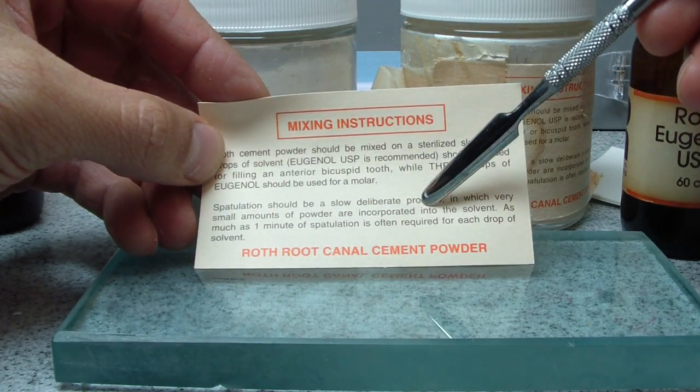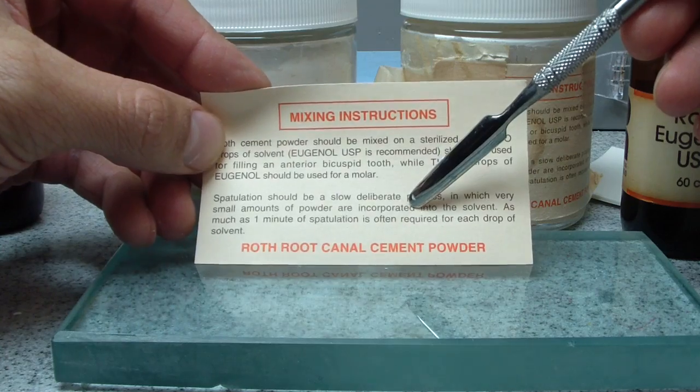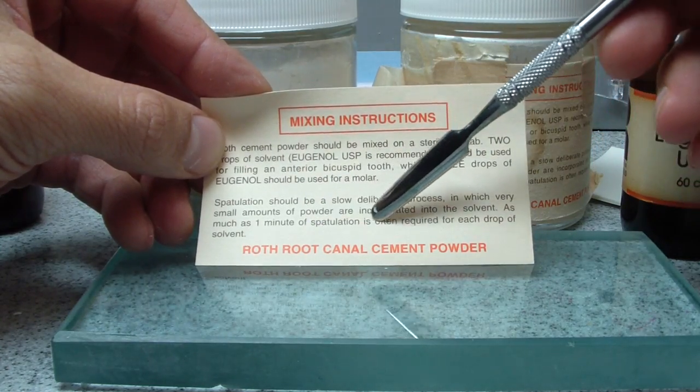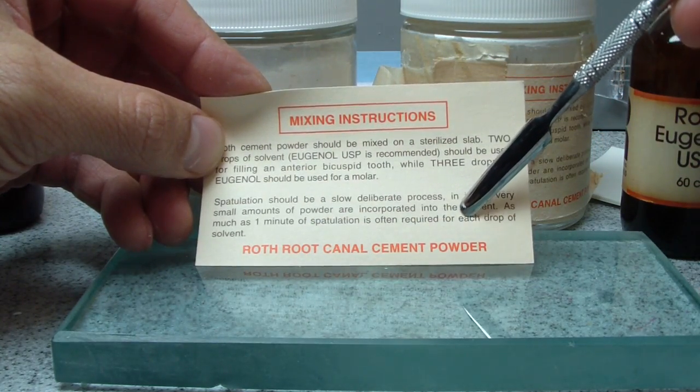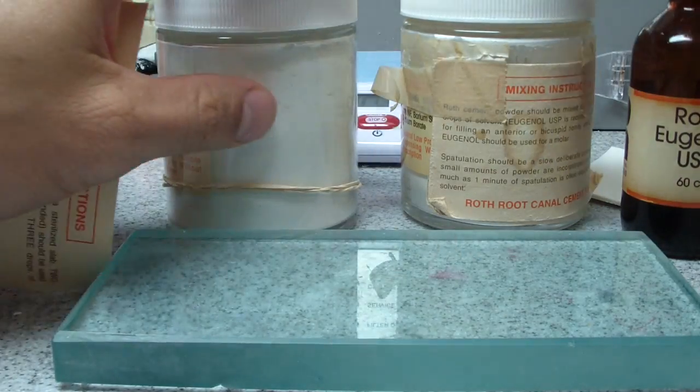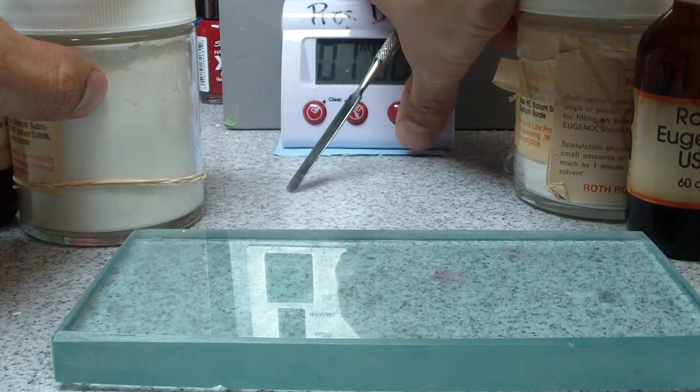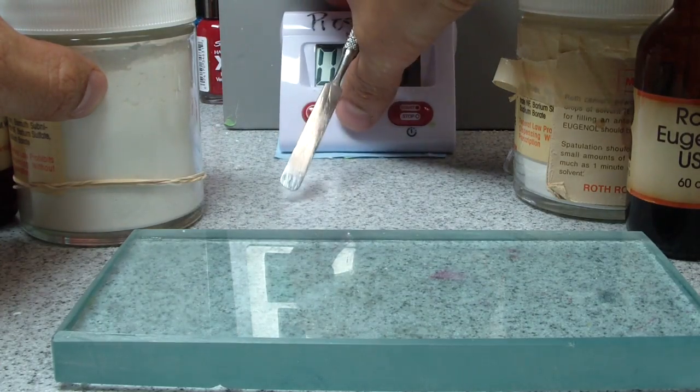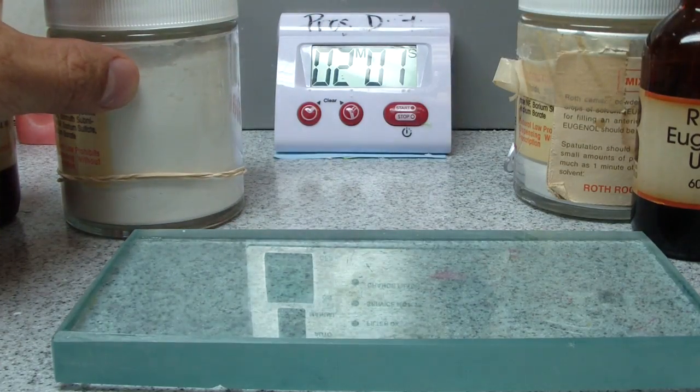But when this was developed, which was a long time ago, I'm going to make that assumption. Spatulation should be a slow, deliberate process in which very small amounts of powder incorporate into the solvent. As much as one minute of spatulation often required for each drop of solvent. So we're going to pretend we're doing a bicuspid, and I found the good old timer. So let's increase that to two minutes.